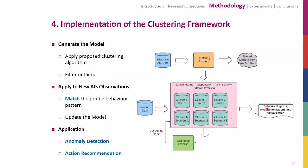After having the core algorithm, I would like to introduce what the clustering framework looks like. This framework applies the proposed clustering algorithm to the historical AIS data and some outliers are filtered in this step. The behavior patterns of marine transportation traffic are profiled based on the clustering result. The model can then be applied to new observations to provide desired outcomes, including vessel behavior reports, visualizations, action recommendations, and even behavior prediction. The model can also be updated after feeding in new AIS data.